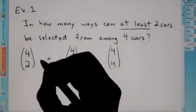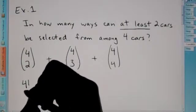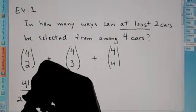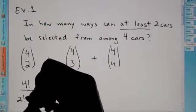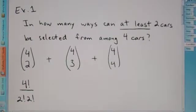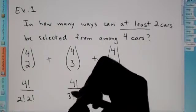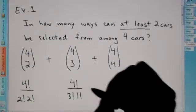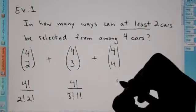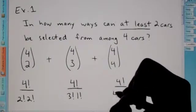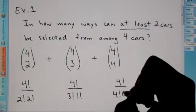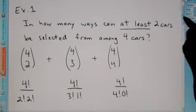So, since we're doing combinations, we're going to do four factorial over two factorial. Four minus two is two factorial. Here, this becomes four factorial over three factorial. Four minus three is one factorial. And lastly, here we have four factorial over four factorial. Four minus four is zero factorial.